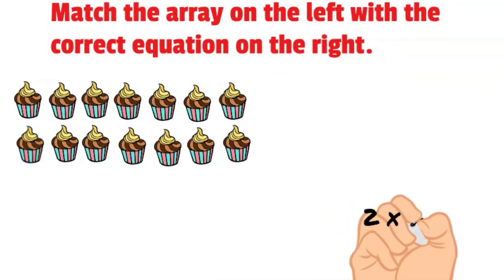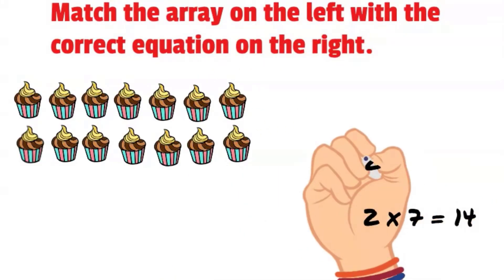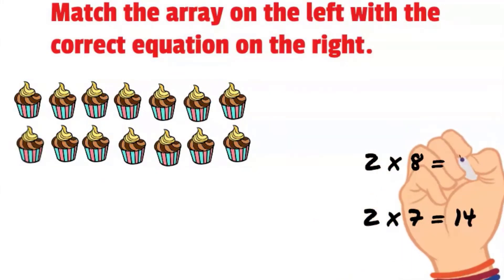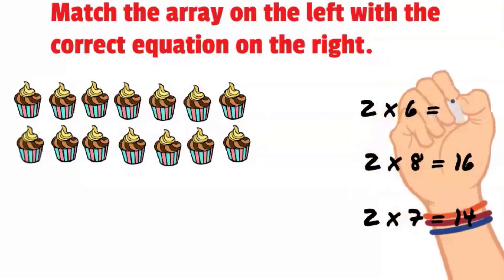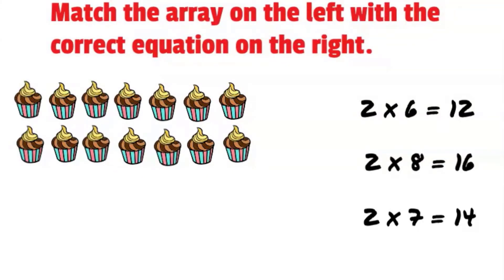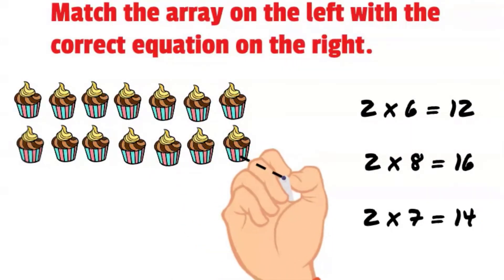Try this one. Exactly, two times seven equals fourteen.